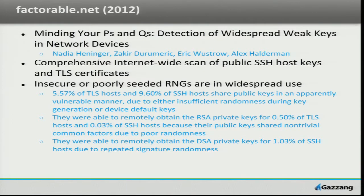Earlier this year, a paper that got a lot of press was published on factorable.net. This was another research paper out of university called Minding Your P's and Q's. It's a great paper. Basically, they did the biggest, most comprehensive internet-wide scan of public SSH keys, host keys, and TLS certificates — grabbed as many public keys as they possibly could — and showed how many insecure or poorly-seeded random number generators were in widespread use.